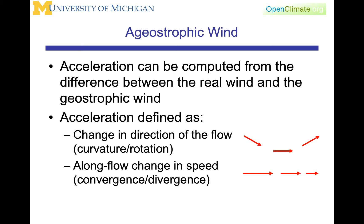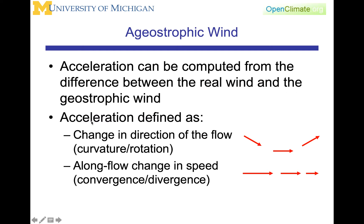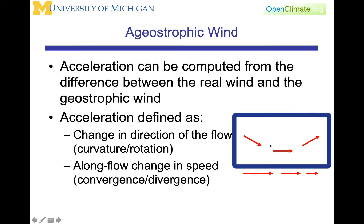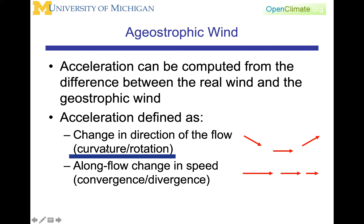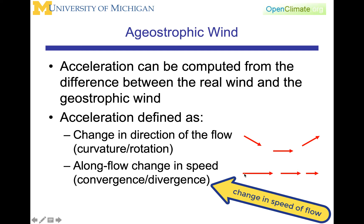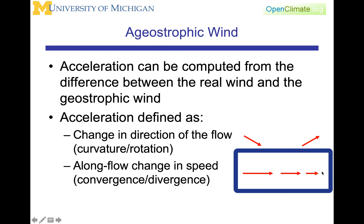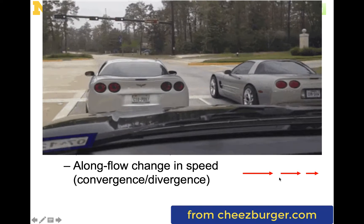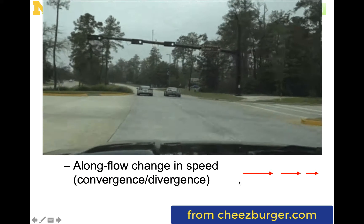Acceleration can occur in two ways. There can be a change of direction while the speed stays the same — representing curvature or rotation. Or there can be a change in speed along the line of flow — convergence or divergence. A useful metaphor is a line of cars approaching a stoplight: as they slow, cars line up bumper to bumper; as they accelerate away, they separate again.